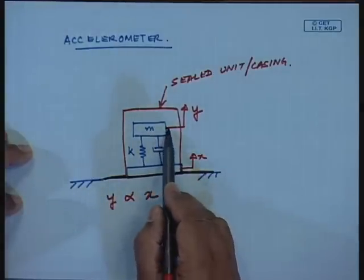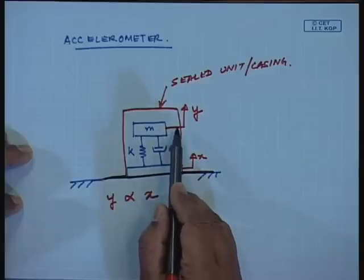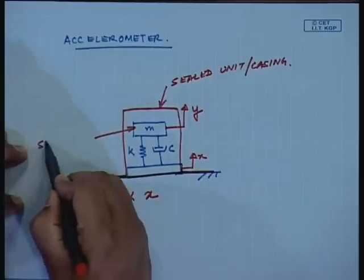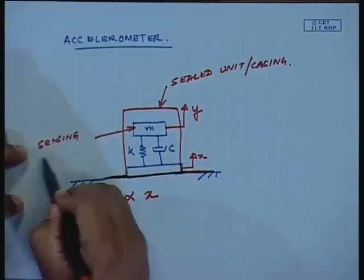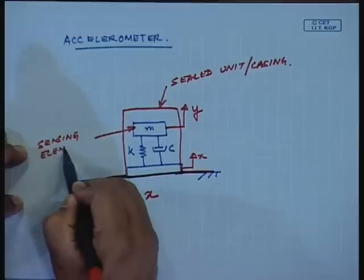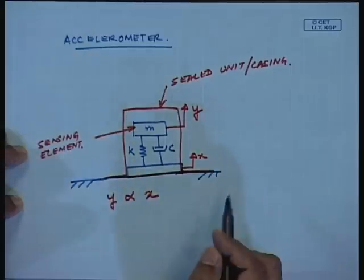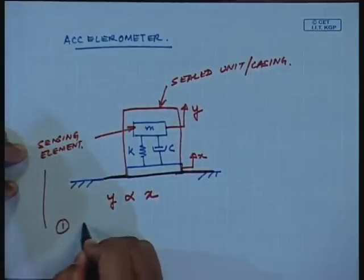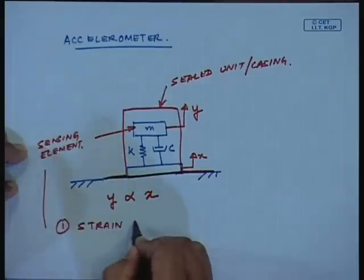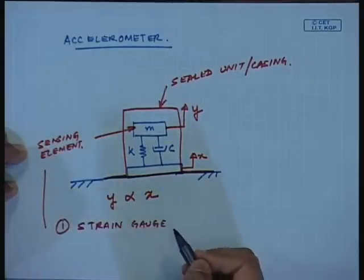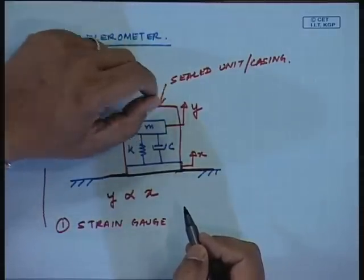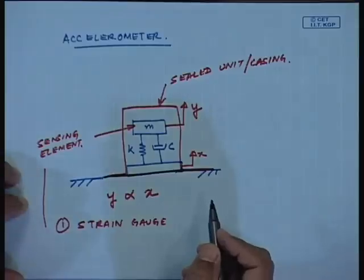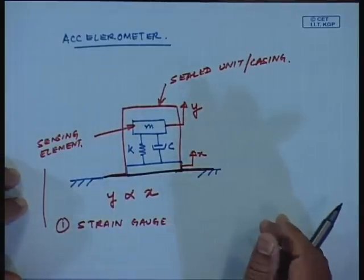Because this mass is having a motion y, I could be putting certain sensing elements. The sensing element could be strain gauges - because of this motion there will be some strain, and this strain will be indirectly responsible for giving a measure of x. This is what initially was the strain gauge type of accelerometer. But strain gauges need a certain power supply, they need a resistance which should not change with temperature. So there are certain problems with this kind of accelerometer.